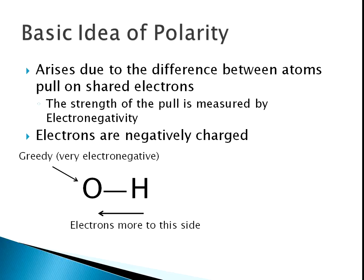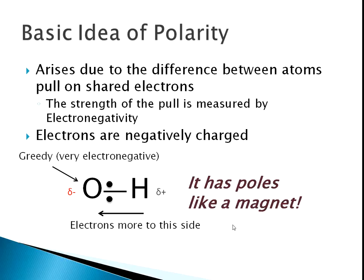So what you have is the electrons being pulled away from the hydrogen and towards the oxygen. Instead of the electrons being in the middle of the bond, you have the electrons over to this side, closer to the oxygen. Since electrons are negatively charged, this side is going to be slightly negative. We use the symbol delta — a lowercase delta — to mean 'slightly.' So this side is slightly negative, and obviously this side must be slightly positive. So we have a slightly negative side of the molecule and a slightly positive side.